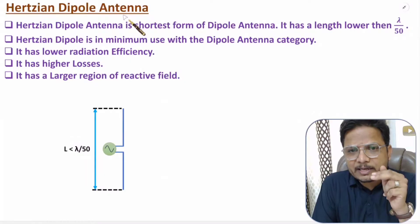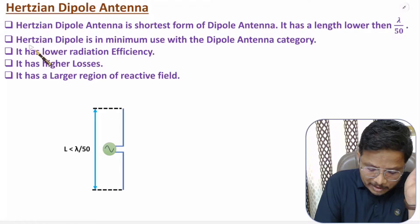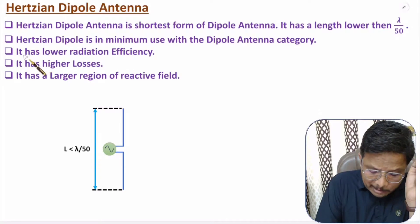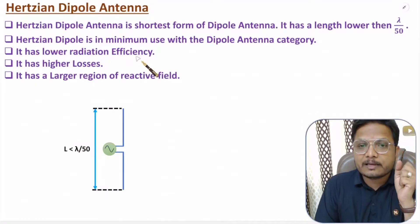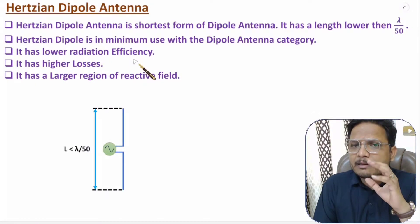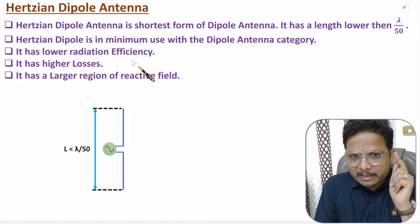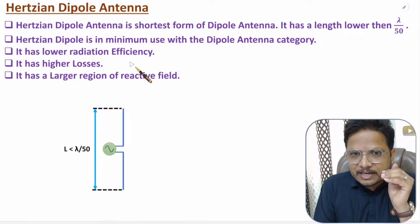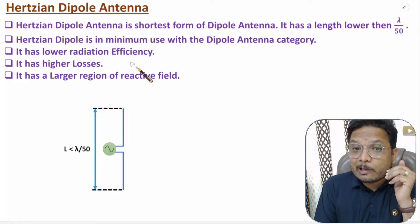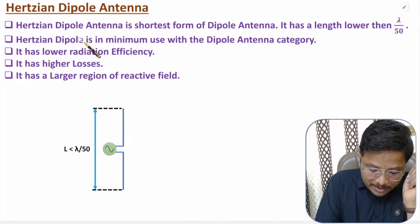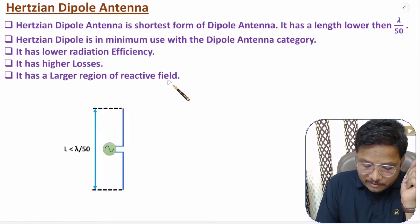The Hertzian dipole has minimum applications. The reason is it has a few issues: it has lower radiation efficiency, which is the minimum among all dipole antenna categories. The reason is the Hertzian dipole antenna has lower radiation resistance, higher losses, and a larger region of reactive field.